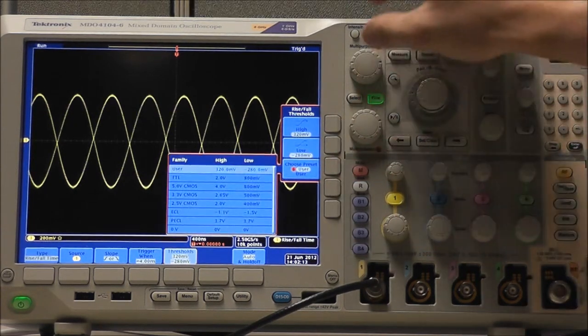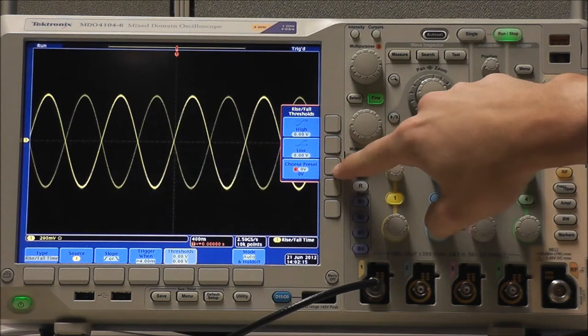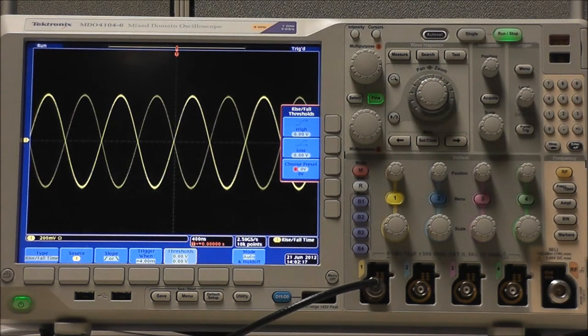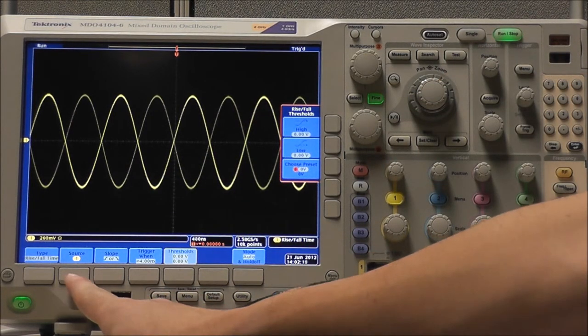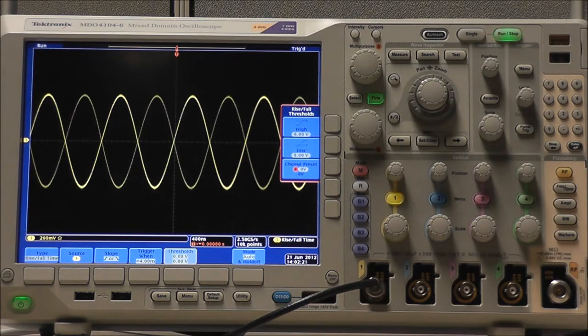Or we could choose a Preset, again using the Multipurpose A control. And as before, our Source and Mode and Holdoff controls have not changed.